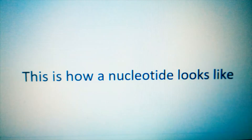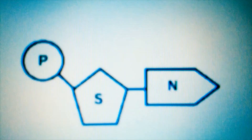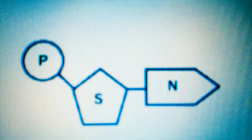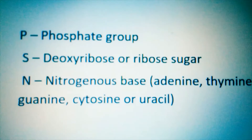A nucleotide is made of three components: the phosphate group, symbolized with P; the deoxyribose or ribose sugar, symbolized with S, which differs according to the kind of nucleic acid — we have deoxyribose sugar in DNA and ribose sugar in RNA; and a nitrogenous base. The nitrogenous bases are adenine, thymine, guanine, cytosine, and uracil.